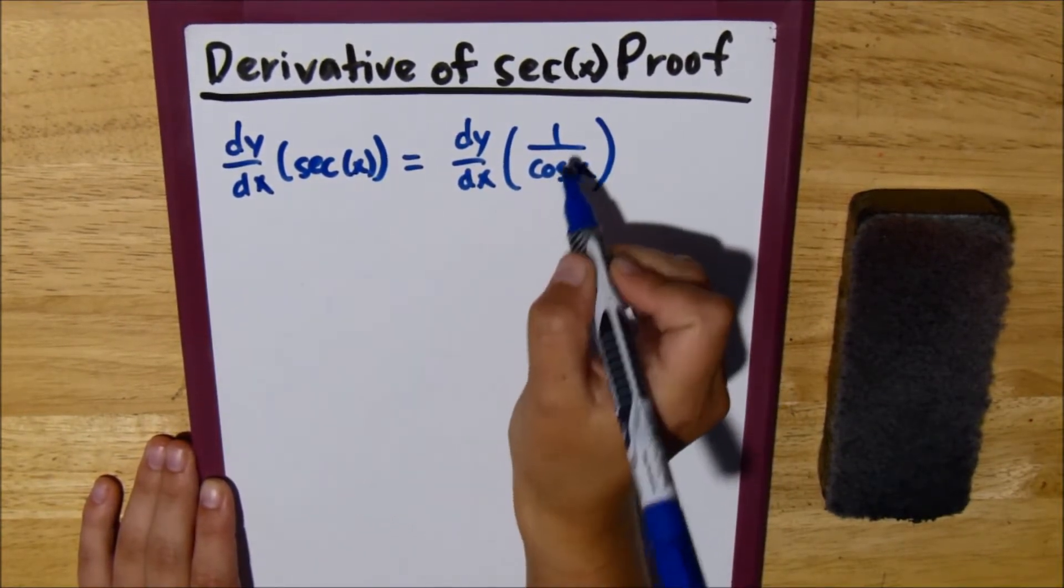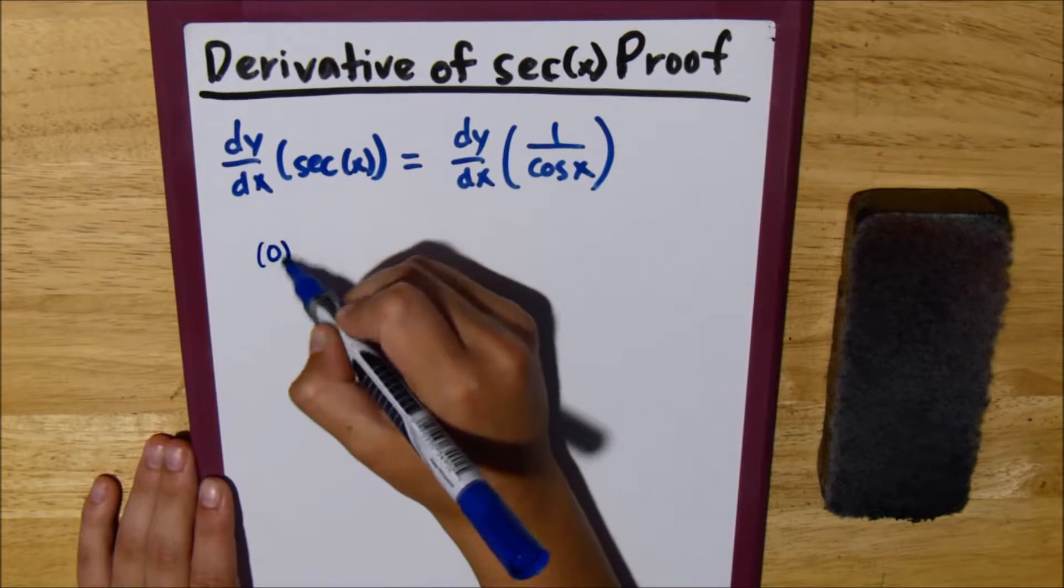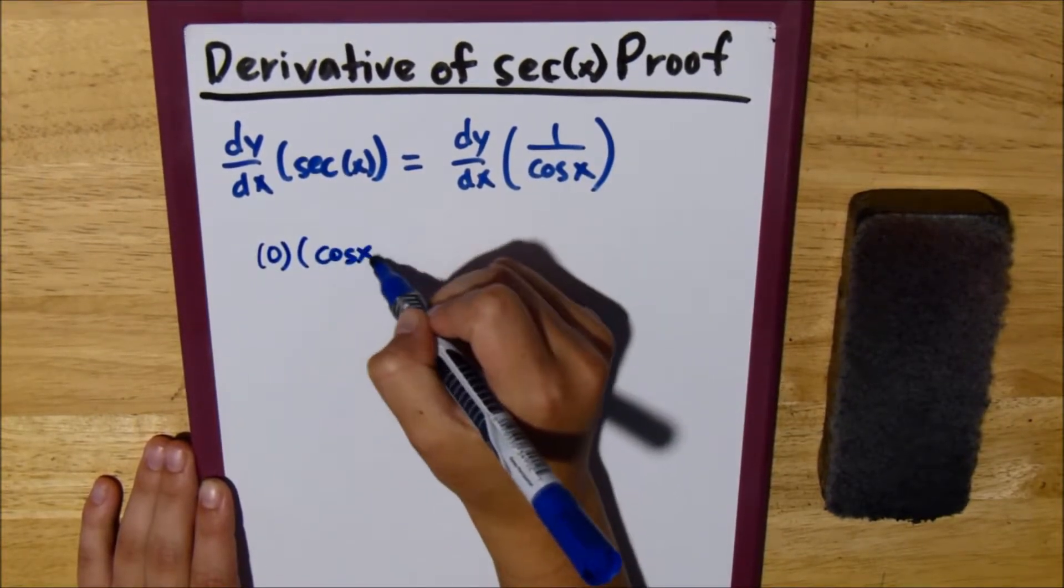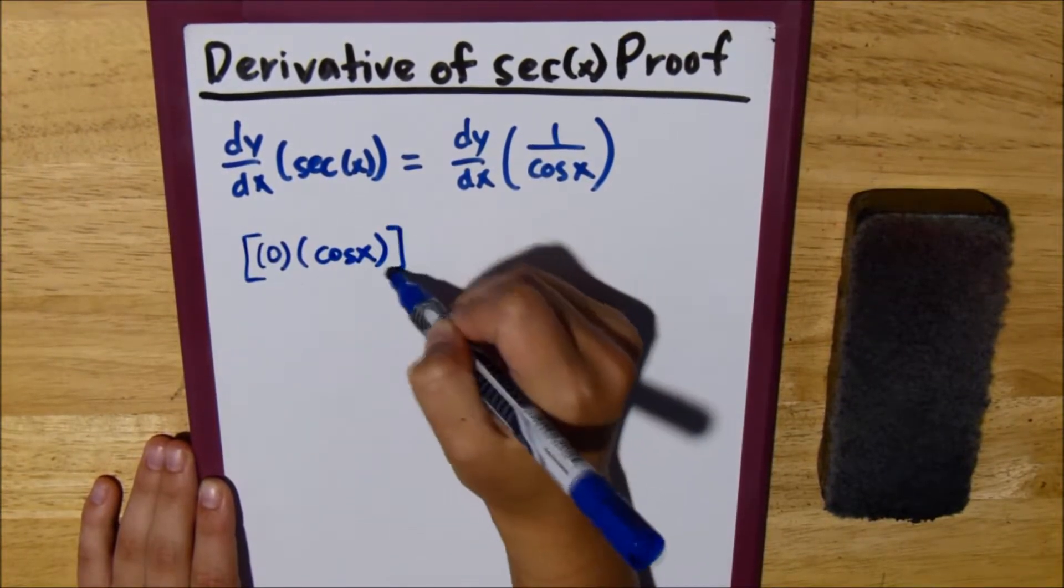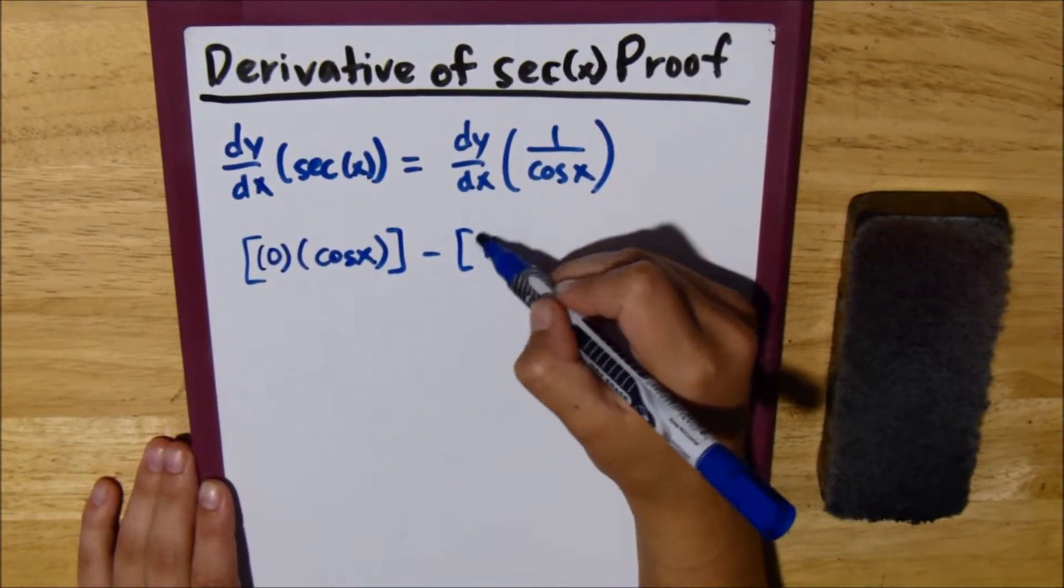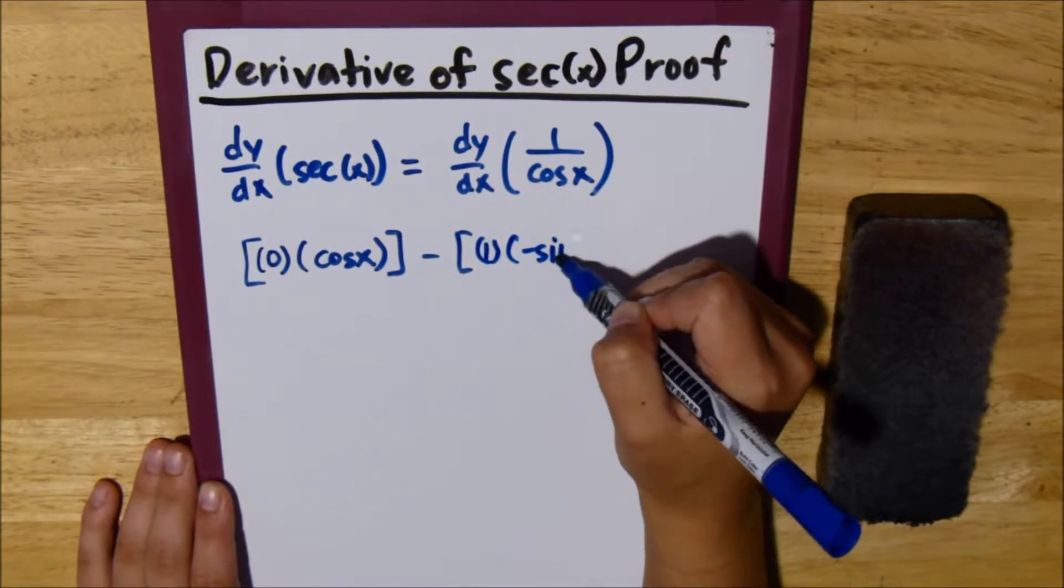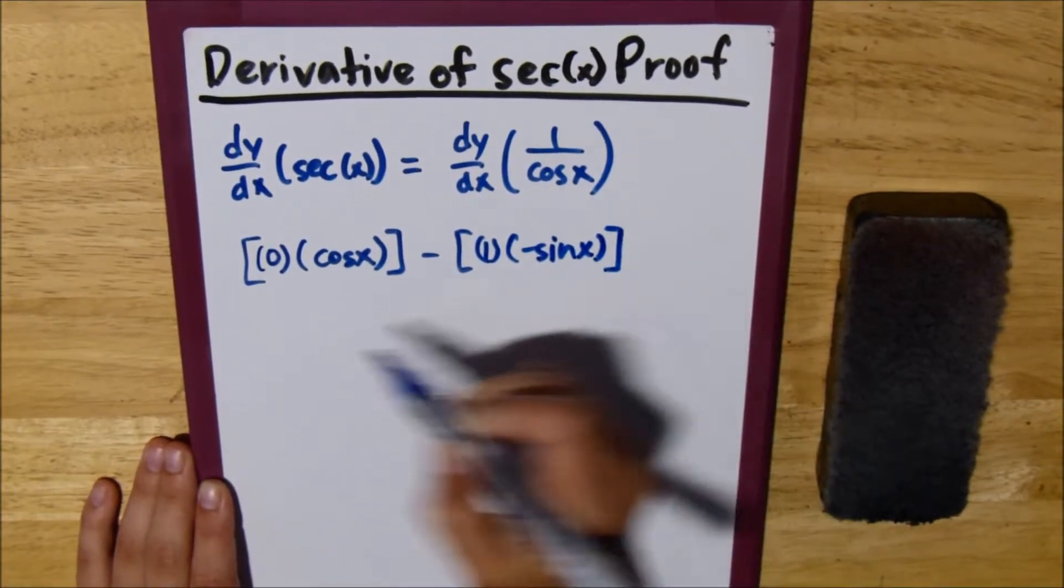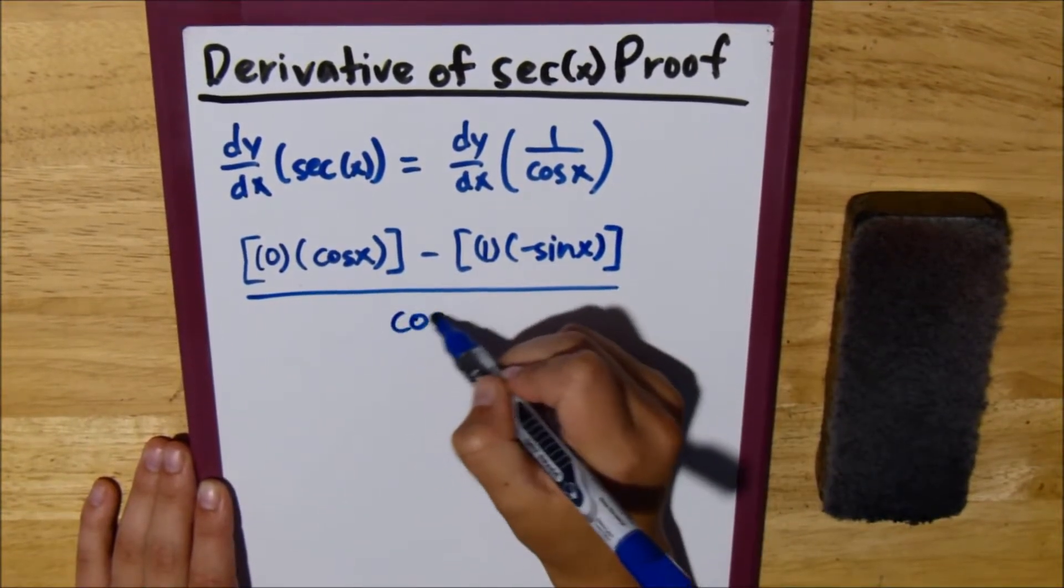We take the derivative of the numerator, that's 0, times the denominator cosine of x, minus the numerator times the derivative of the bottom, negative sine of x, all over the denominator squared.